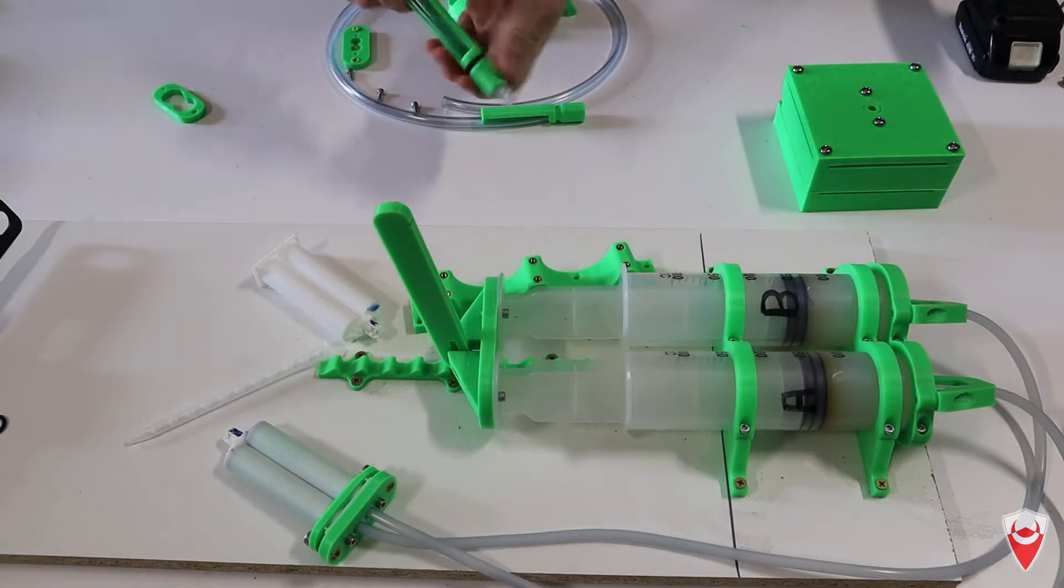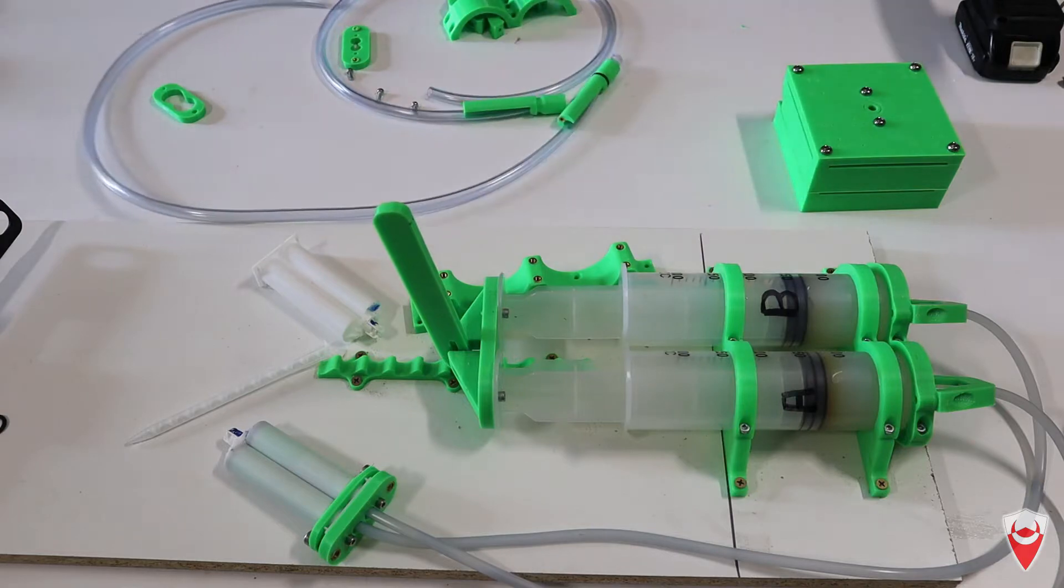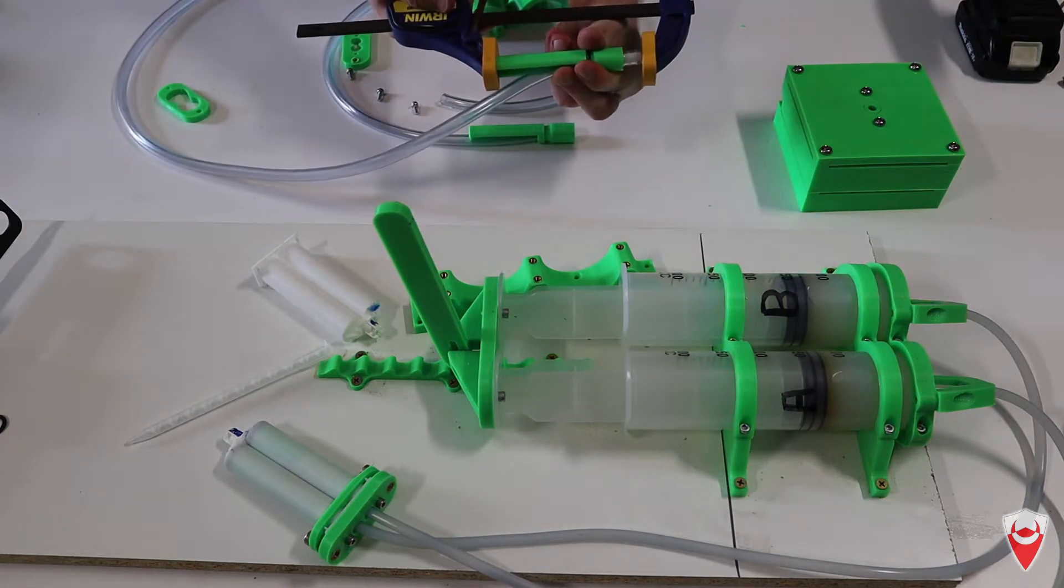So you just take your hose, you feed it through. And then because it's an interference fit, you've got to put a bit of force on it. I still don't have a press, so a portable press it is.